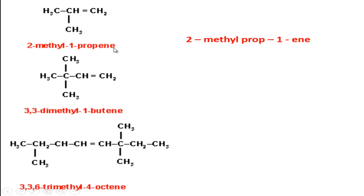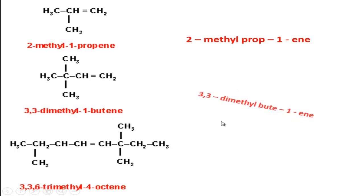Now another example. This is the longest carbon chain; numbering should start from this side because the double bond is present from carbon one on this side, but from the other side it would be carbon three. So numbering starts from this side: one, two, three. In carbon three there are two methyl radicals, so its name is 3,3-dimethyl-1-butene, or 3,3-dimethyl but-1-ene.